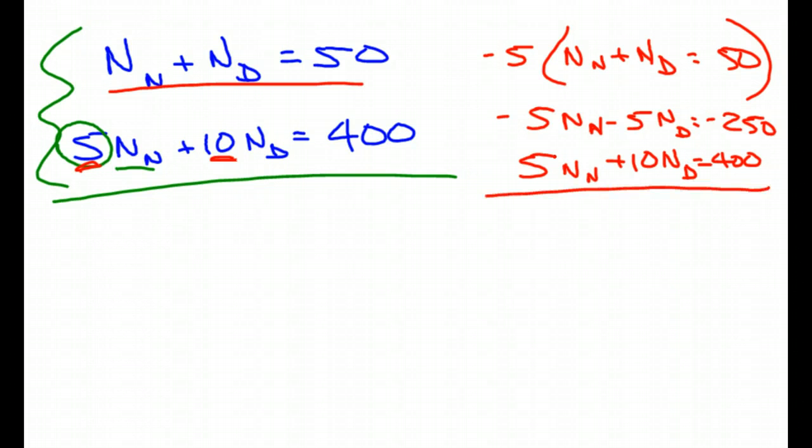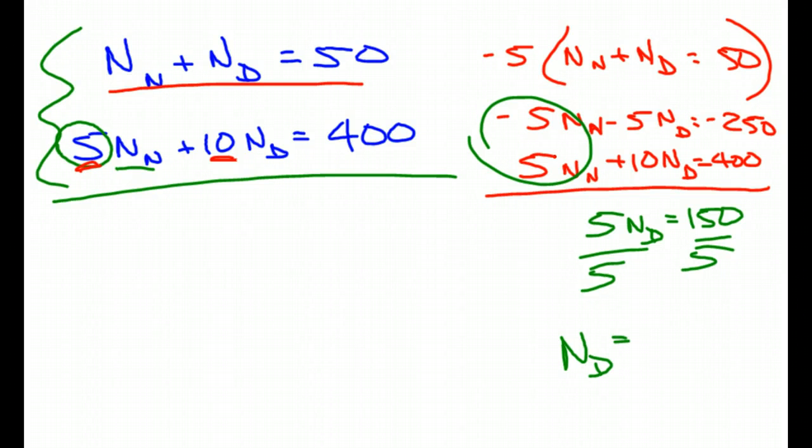And then I've got my 5NN plus 10ND equals 400. Okay. So at that point, I can start combining. So I'm going to add these two and I get zero. Add these two and get what? Five. Five. Equals? 150. So I divide by 5, divide by 5. My number of dimes is what? 30.